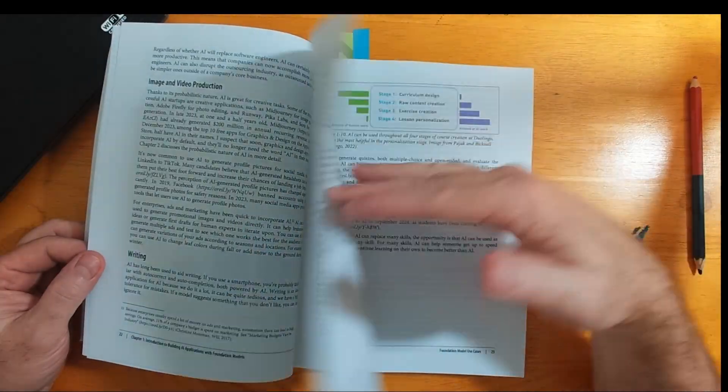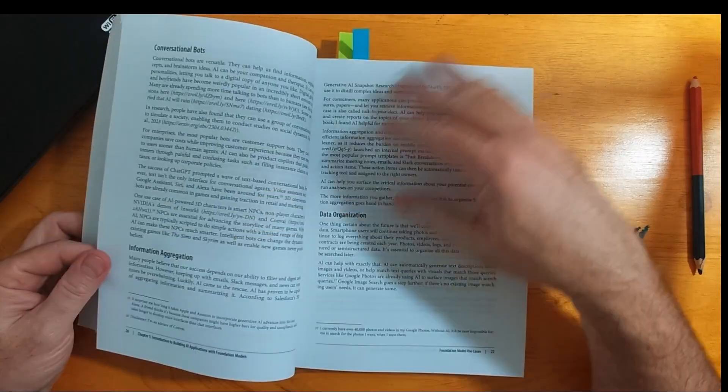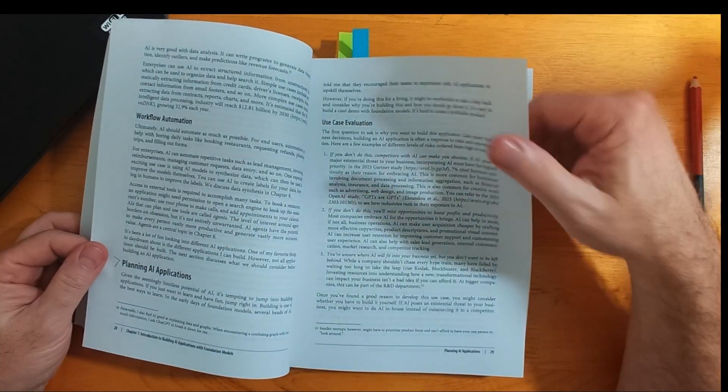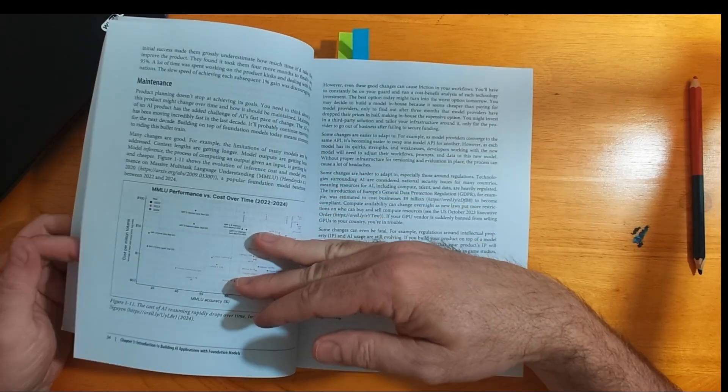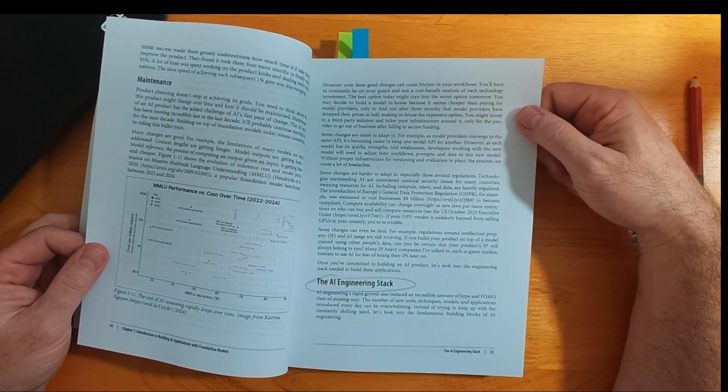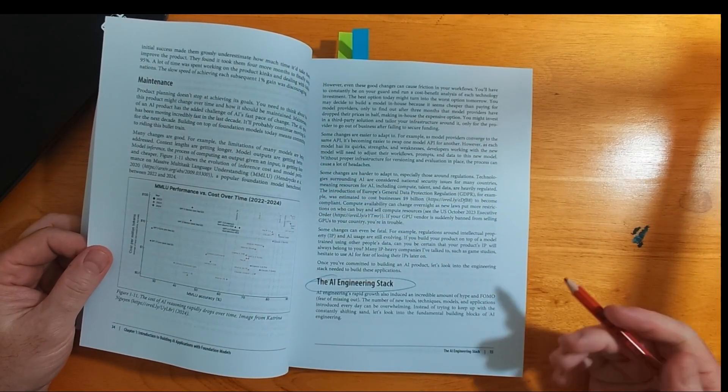Chapter two is understanding foundation models. Depending upon your previous knowledge and experience, you might skip or skim this chapter. But do make sure you have an understanding of post-training and fine-tuning. These topics come up later in the book.